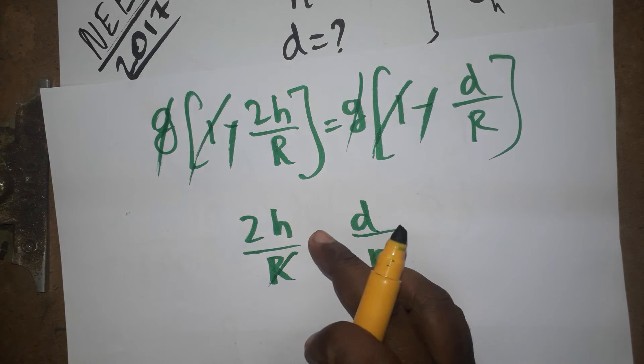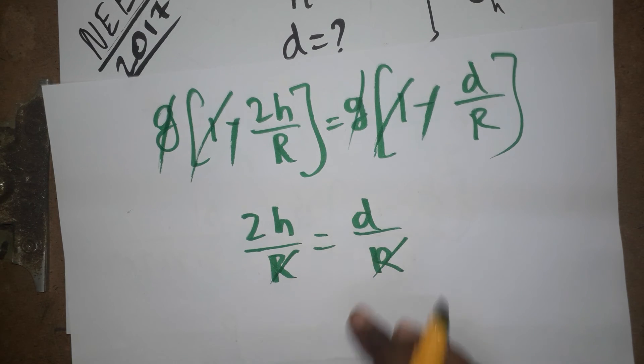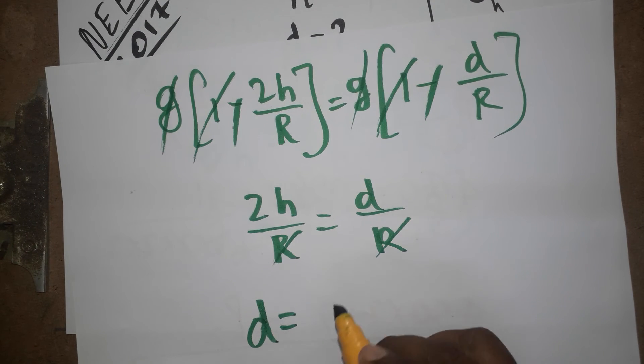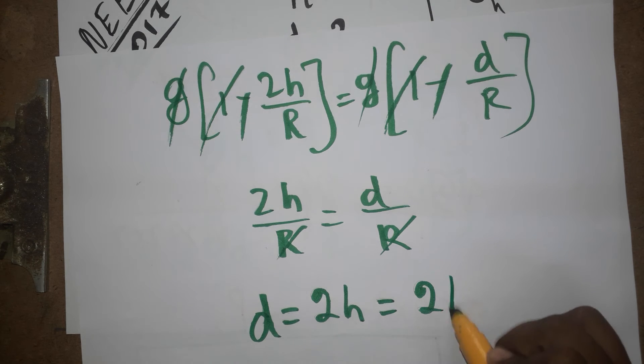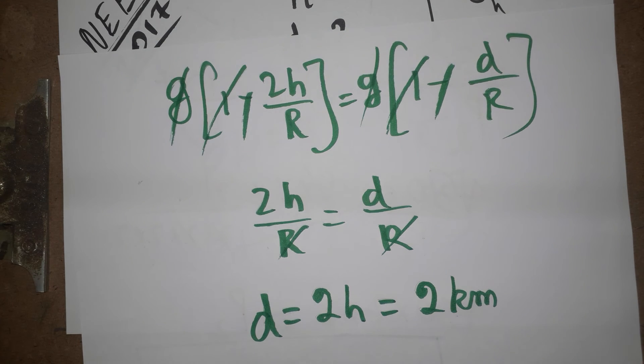They are given height - height is 1 kilometer. How much depth is going to create the same gravity? So d equals 2h. H is 1 kilometer means depth is going to happen in 2 kilometers. The same gravity can be produced.